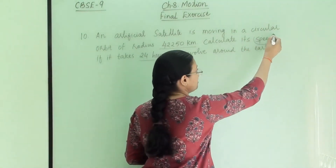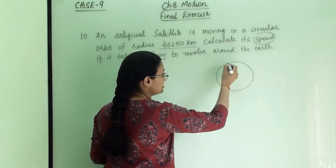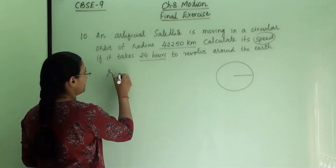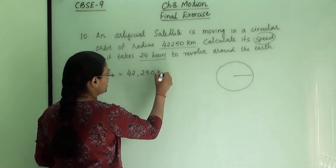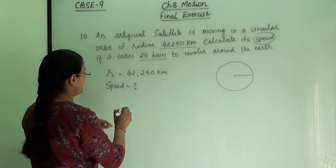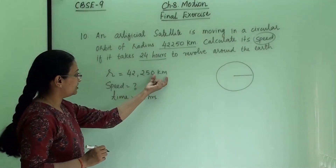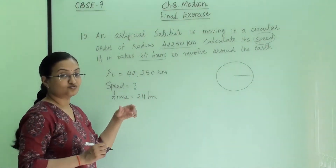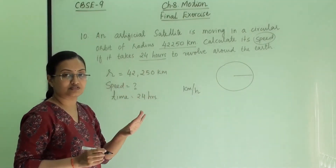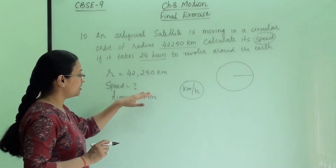We have to find out its speed. The satellite is in circular motion and the radius given is 42,250 km. The time given is 24 hours. Since the distance is in km and time is in hours, we can find the speed in km per hour — no unit conversion is needed.